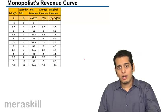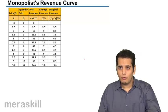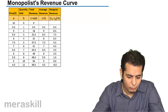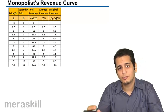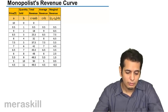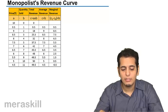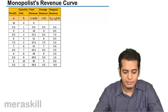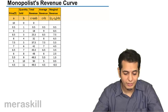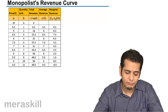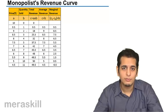Let's see what are the revenue curves for the monopoly market. We can see that the monopolist is trying to sell his product. If the price is 10, he is able to sell 0 units. But when he reduces the price, he is able to sell 1 unit. When he reduces the price further, he is able to sell 2 units. When the price is 8.5, he is able to sell 3 units.